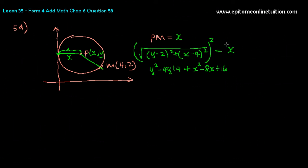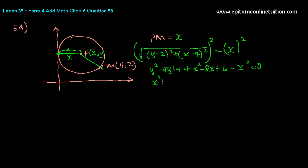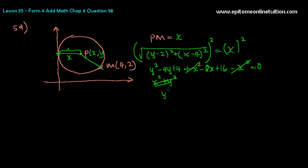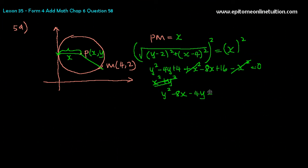Do remember you're squaring both sides. Shift the x squared over — the x squared terms cancel. That leaves y squared minus 8x minus 4y, and the constants give 16 plus 4 equals 20. So the equation of the locus of point P is y squared minus 8x minus 4y plus 20 equals 0.